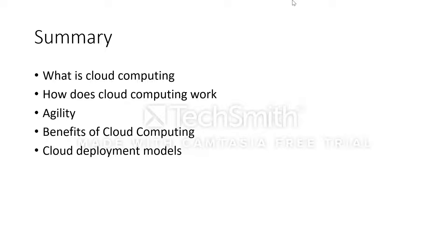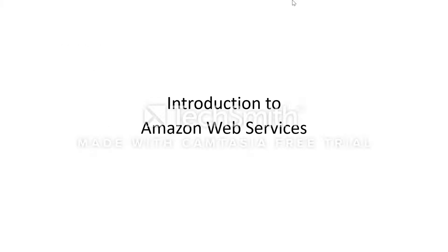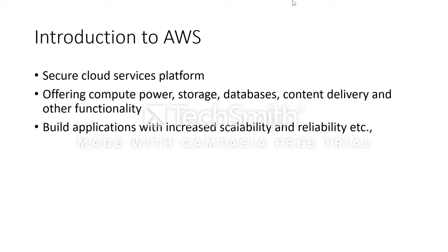So we've covered: what is cloud computing, how does it work, the agility benefits, and the cloud deployment models. Now let's move on to the next slide — Introduction to Amazon Web Services. What is Amazon Web Services? It's a secure cloud services platform offering compute power, storage, databases, content delivery, and other functionality, enabling you to build applications with increased scalability and reliability.